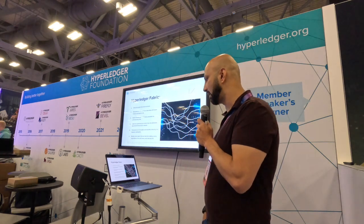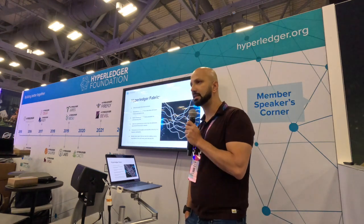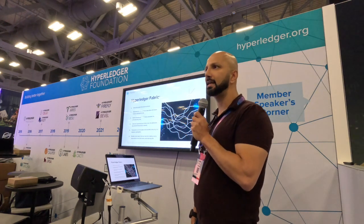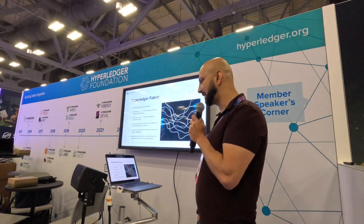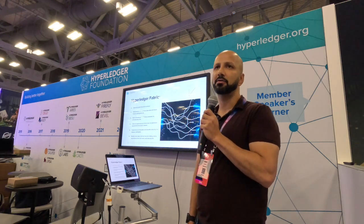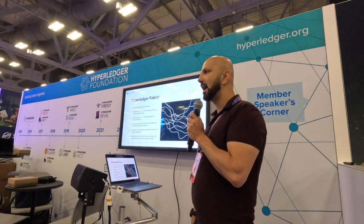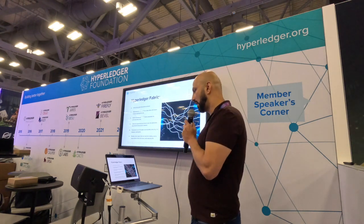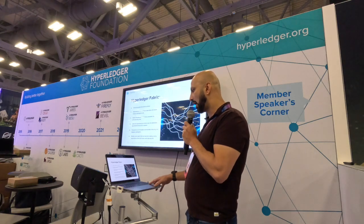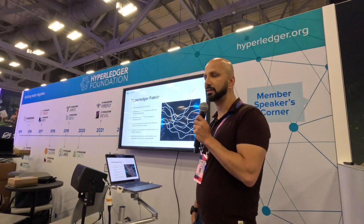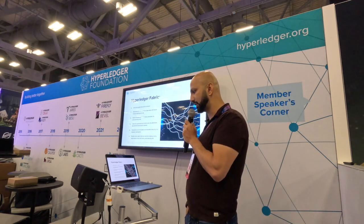Like other blockchain networks, there is a smart contracts component, and this is where all your business processes and business logic reside. Smart contracts are nothing but self-executing code — it just needs to meet certain criteria, predetermined criteria set by the different participating organizations. All the code and agreements are distributed across the nodes, and when the conditions are right, the business logic is executed.